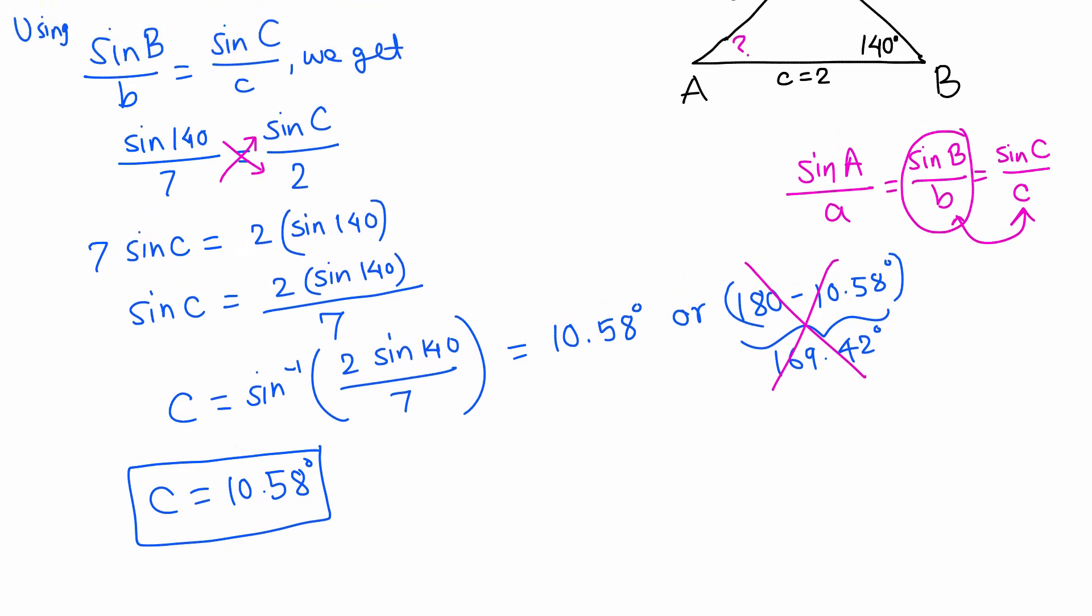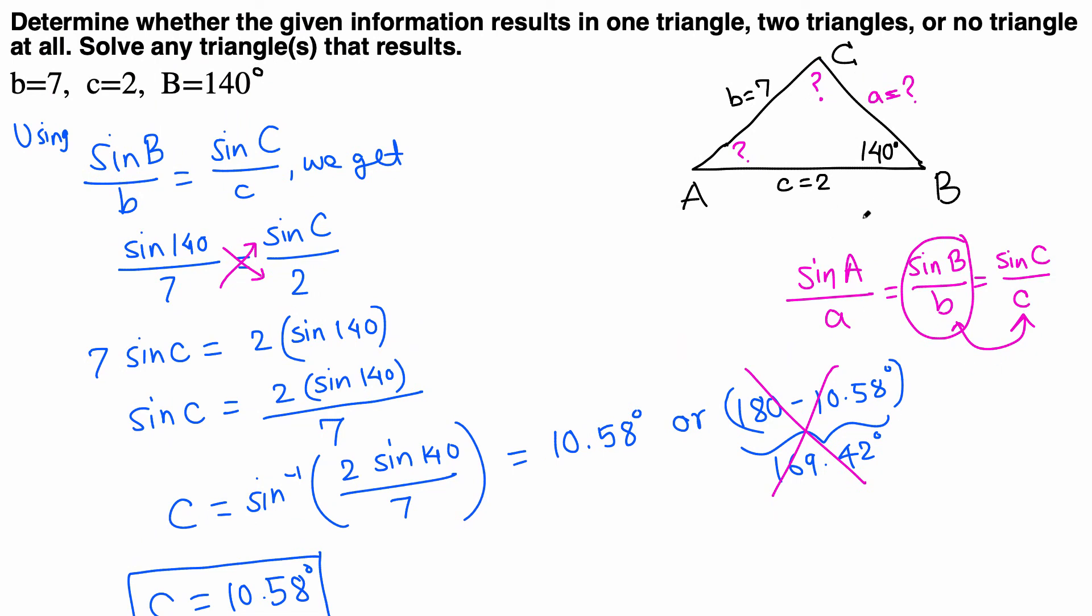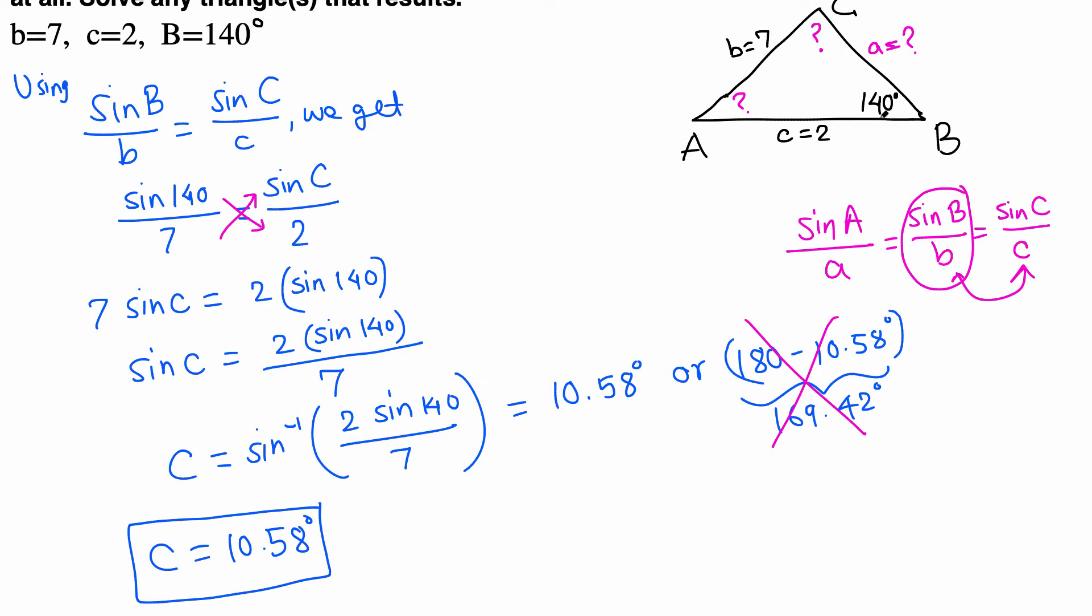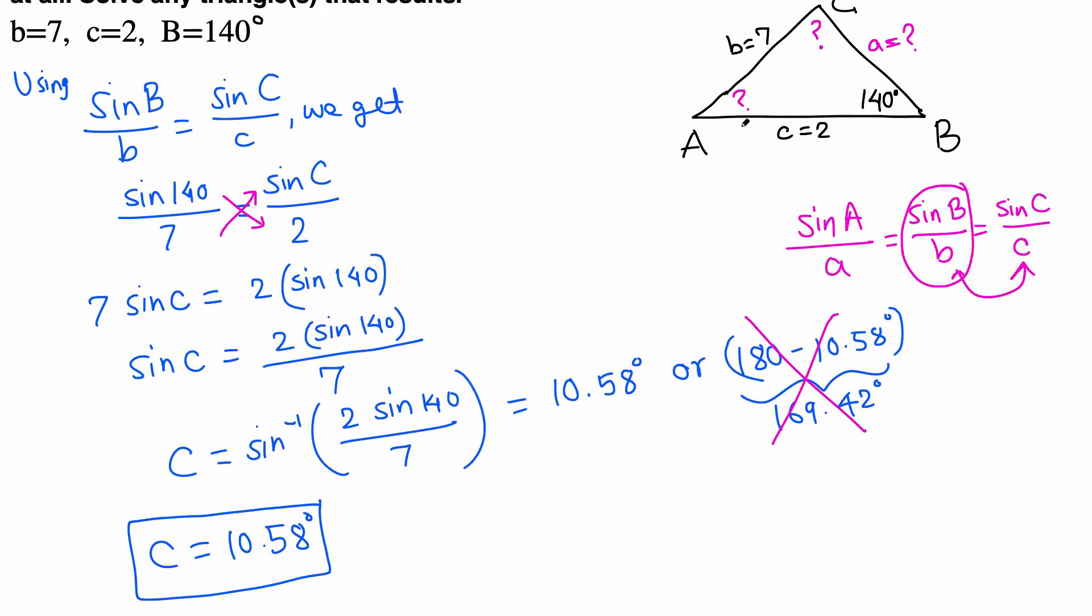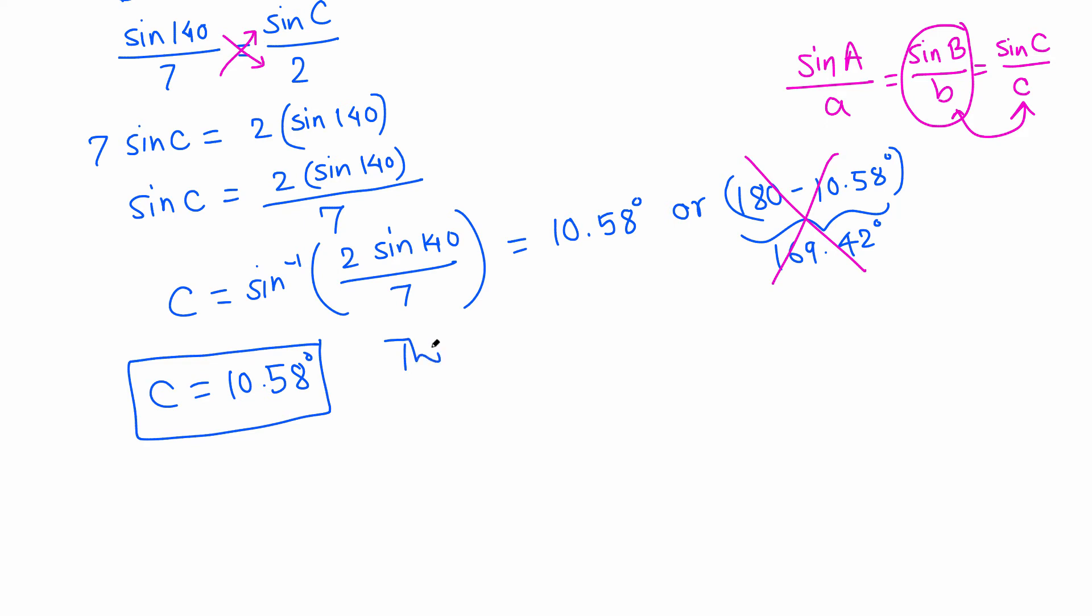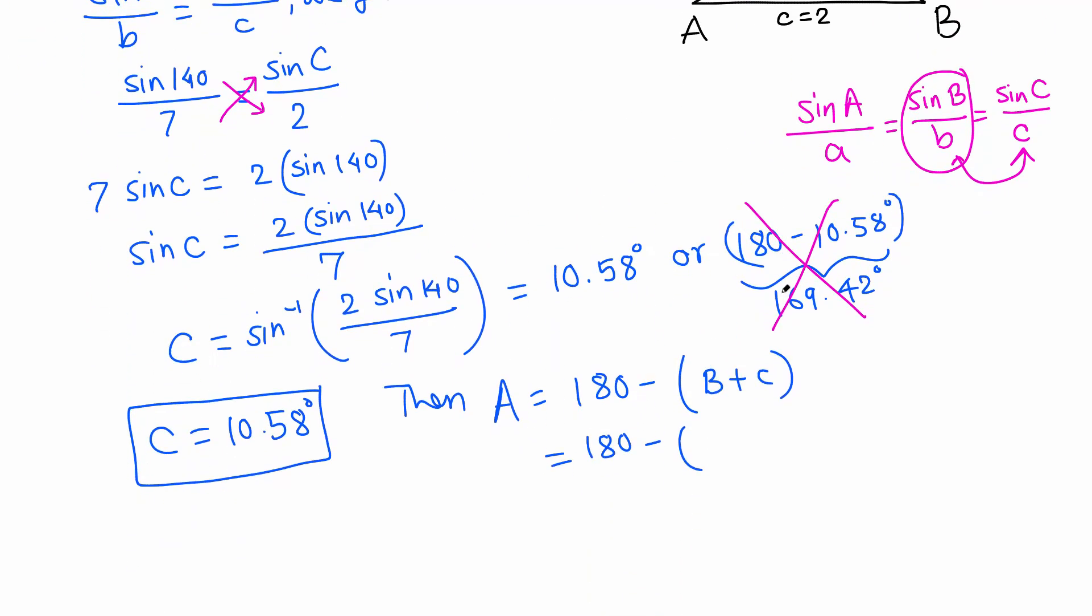Now what is left to find? We have angle C. This angle is found, and the sum of these three angles is 180. So A is just 180 minus the sum of the other two. Angle A is 180 minus B plus C, which is 180 minus 140 plus 10.58. Using your calculator, we get 29.42 degrees. So A is 29.42 degrees.